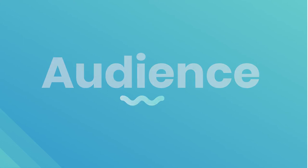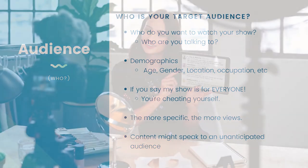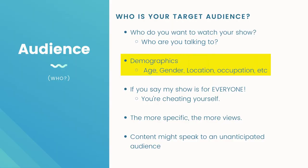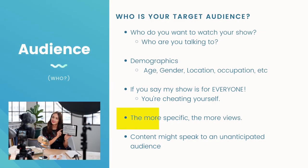Audience. Who is your target audience? Who do you want to watch your show, and who are you talking to? By that I mean demographics — age, gender, location, occupation, etc. If you say your show is for everyone, you're really fooling yourself. If you're doing a dating show, it's not for kids. Even a history show has different kinds of buffs by age — younger people want something more zippy and flashy with lots of pictures, while older people can handle more somber, longer-playing videos. The more specific you are about who you're talking to, statistically you're going to get more views, because those are the people who will find your topic and be most interested in it.